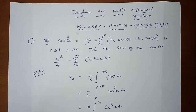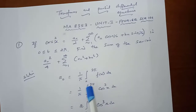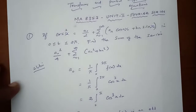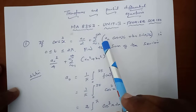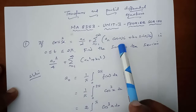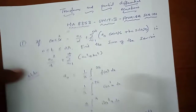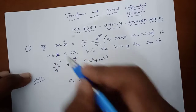Transforms and Partial Differential Equations, MA8353 Unit 2 Fourier Series. Problem number 1: if cos³x equals a₀/2 plus sigma n=1 to infinity of aₙcos(nx) plus bₙsin(nx) in the class interval 0 less than x less than 2π,